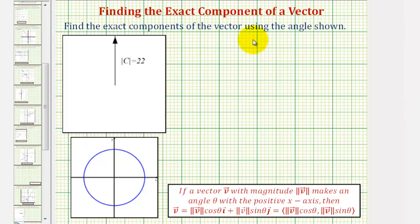We want to find the exact components of the vector using the angle as shown below. But notice in this example, no angle is shown.